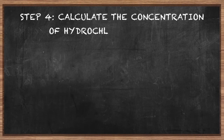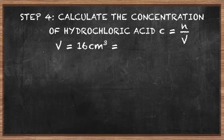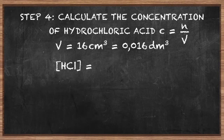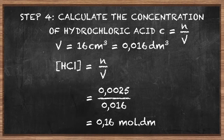Step 4: calculate the concentration of hydrochloric acid. Concentration equals the number of moles divided by the volume of acid in decimetres cubed. 16 cm³ equals 0.016 decimetres cubed. The concentration of the acid equals 2.5 × 10⁻³ divided by 0.016 decimetres cubed, giving an answer of 0.156 mol per decimetre cubed.